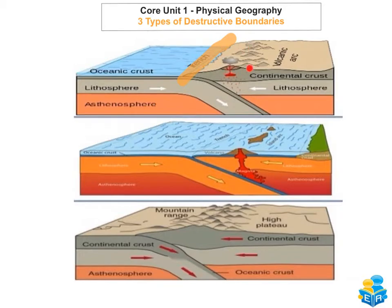As you can see here, fold mountains can also form when oceanic and continental crust are in collision. What happens is the continental plate scrapes layers of sediment off the ocean floor, and these rocks then buckle and fold into high fold mountains. An example of this would be the Andes in South America.